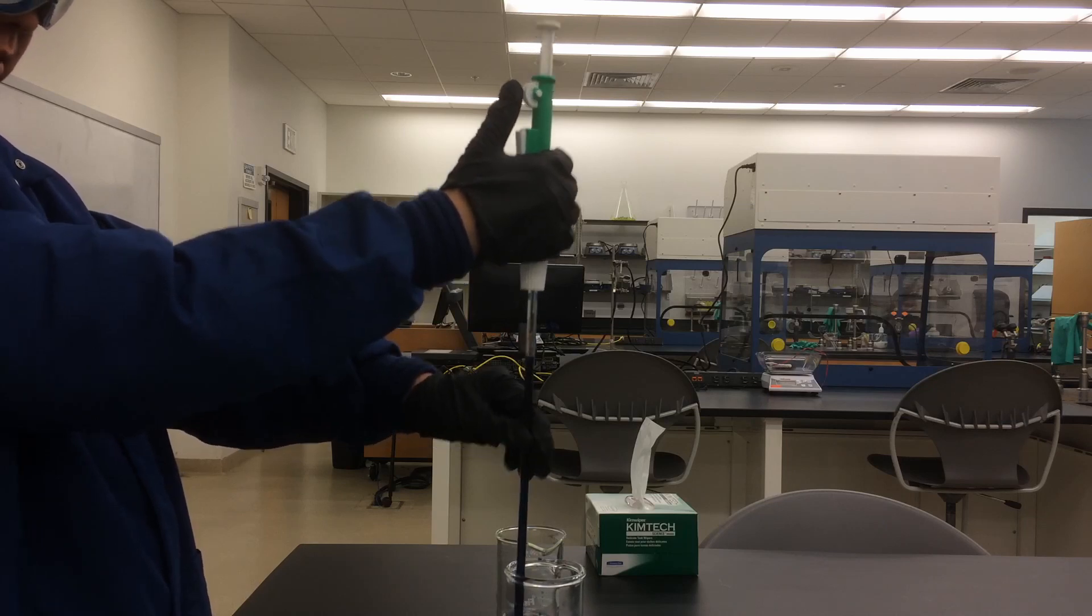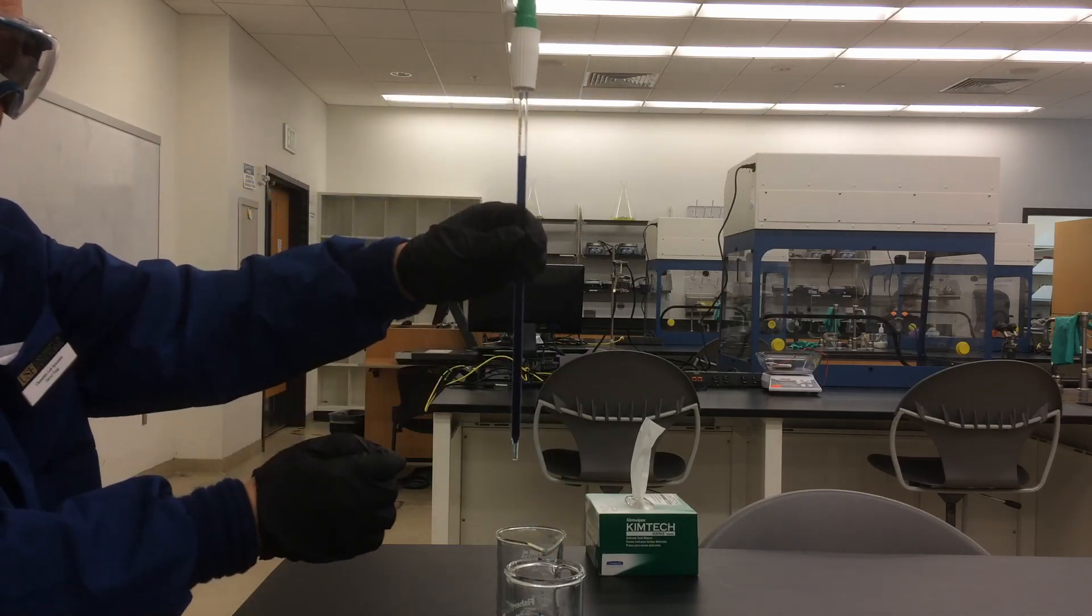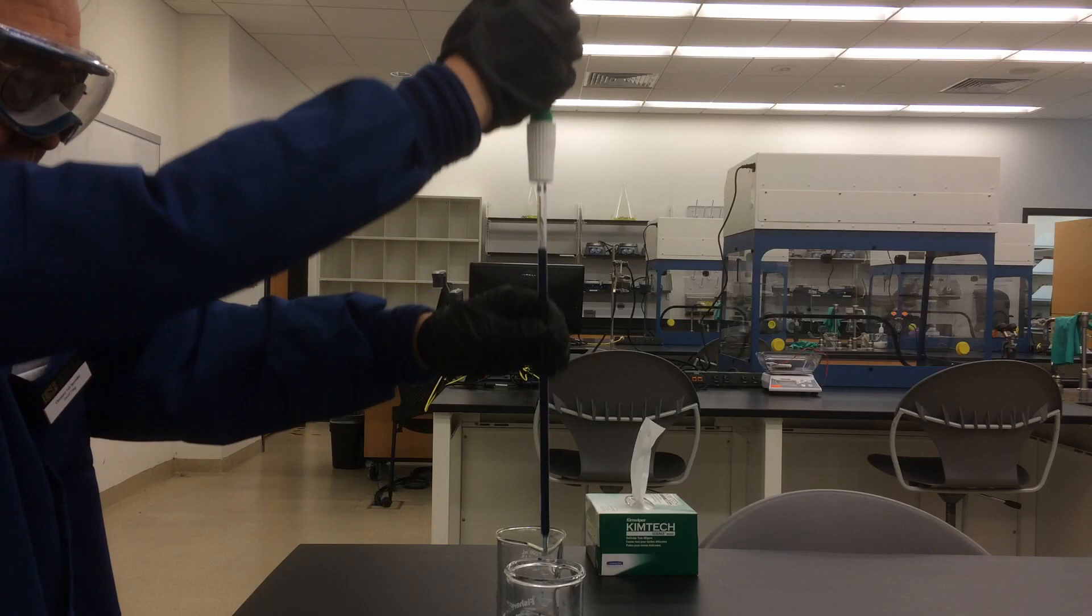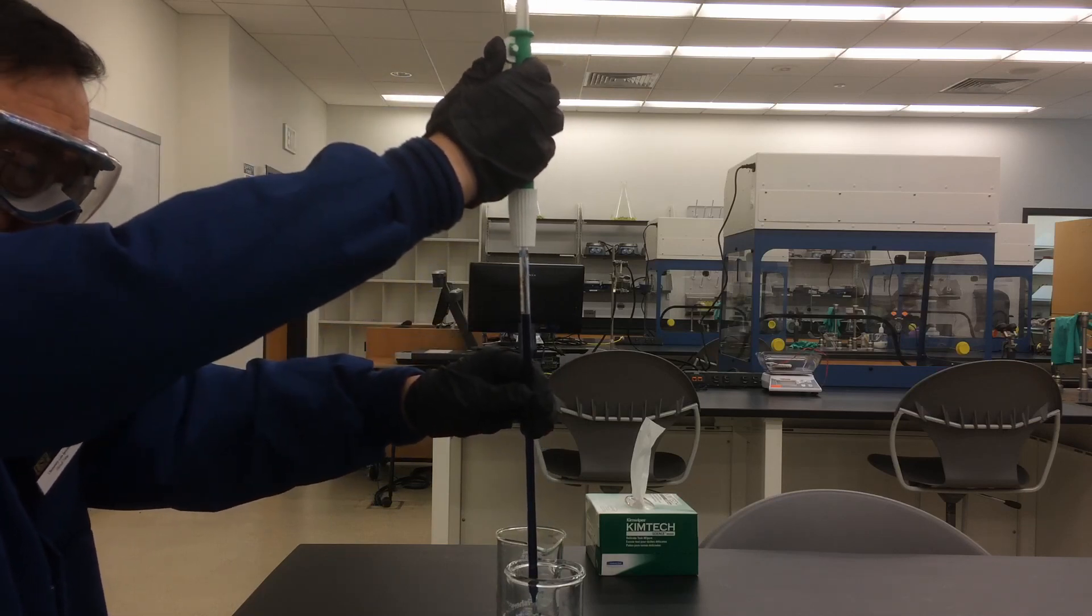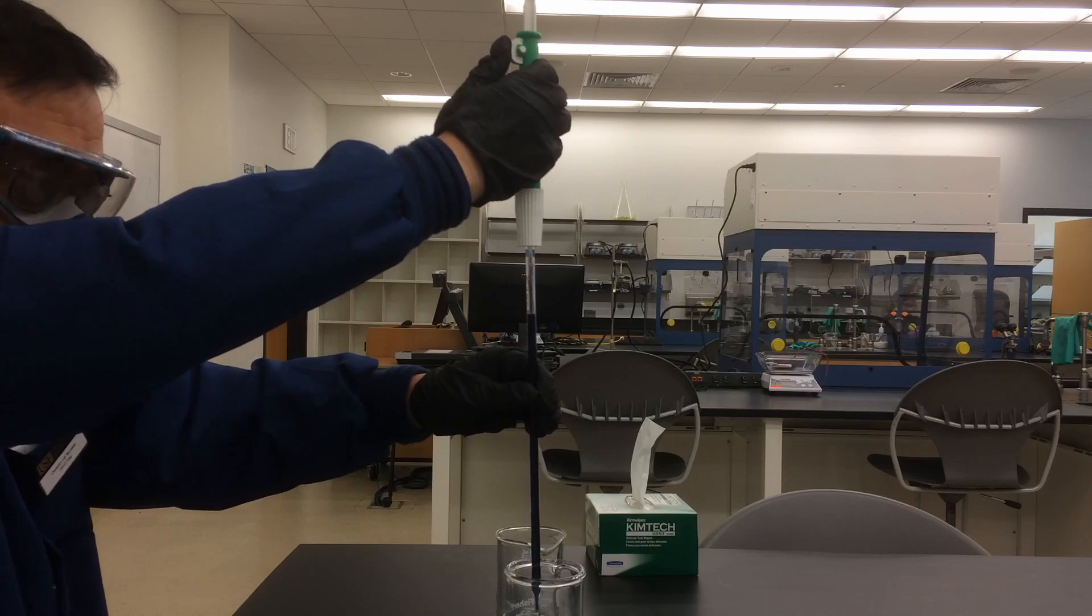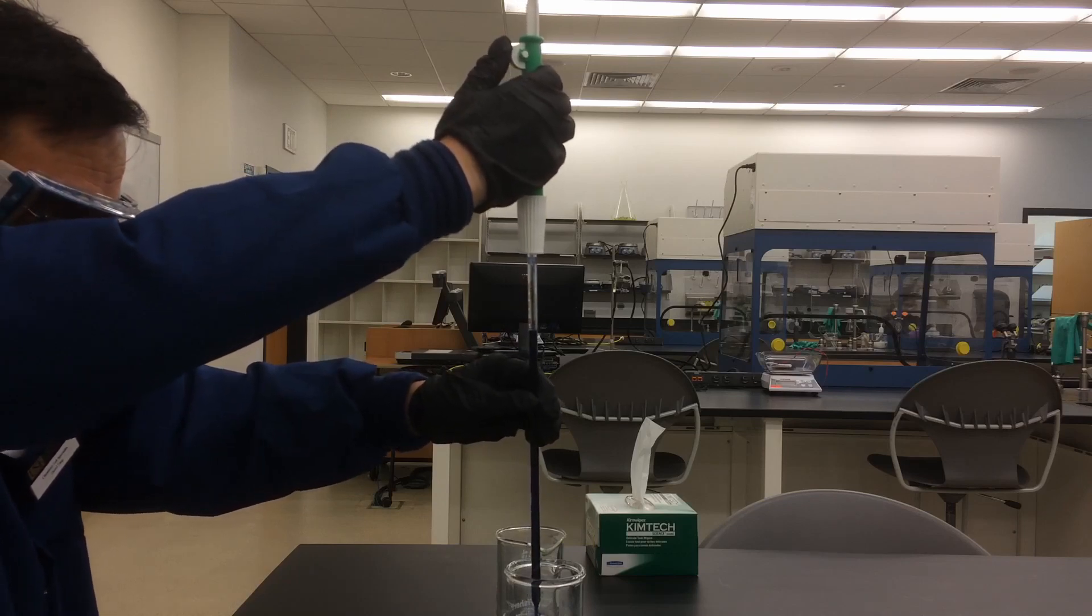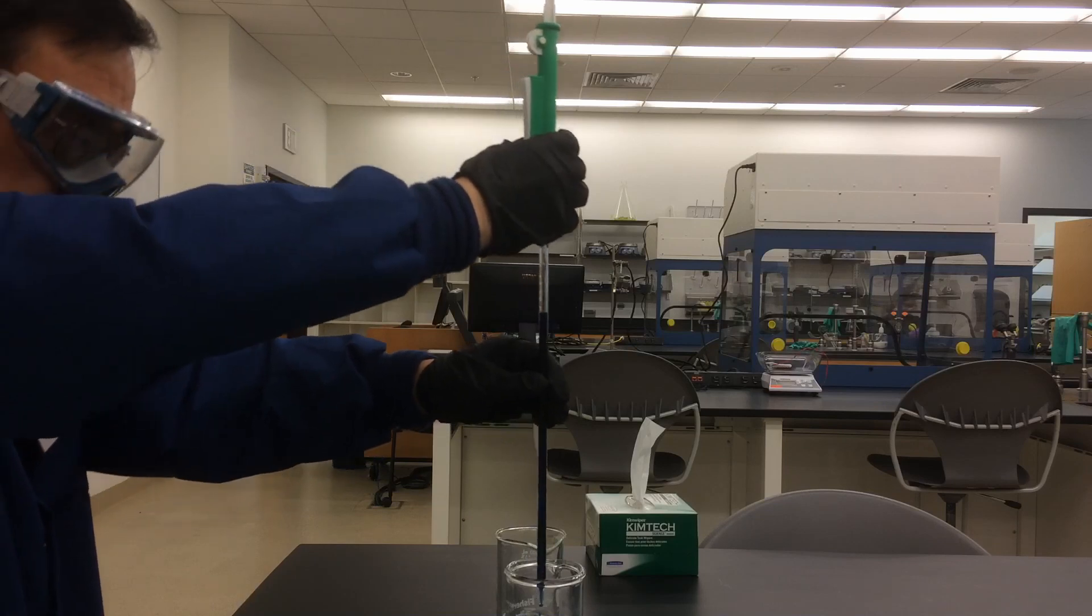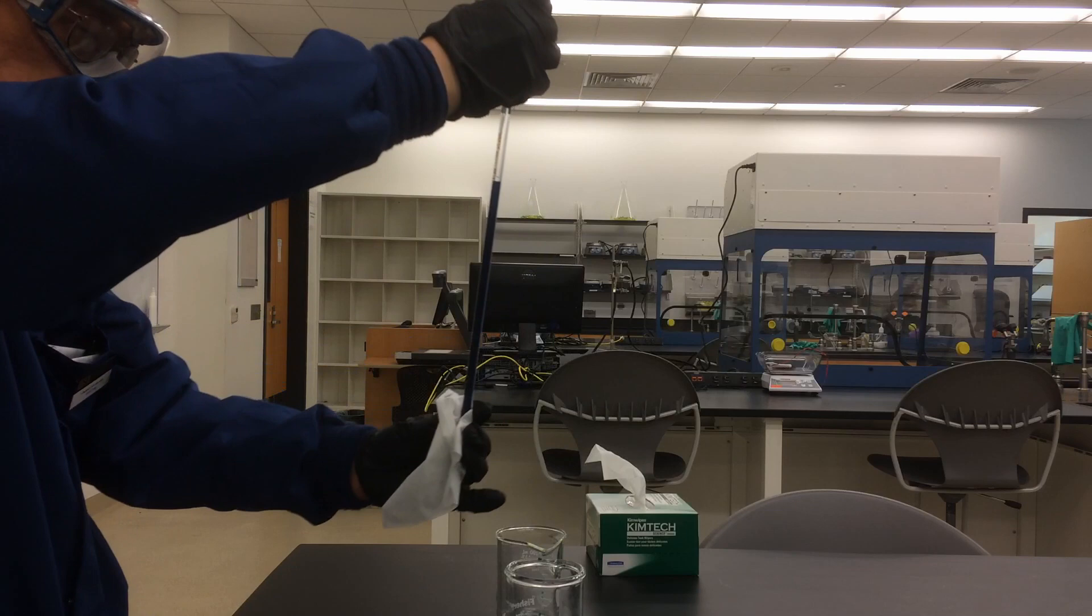With the zero mark at eye level, slowly roll up the wheel to drain the solution until the bottom of the meniscus is on top of the zero mark. And you can remove the pipette from the pump.